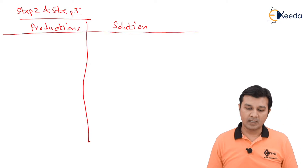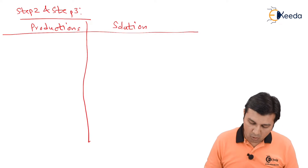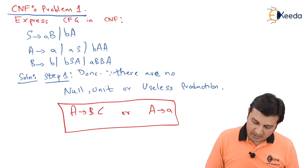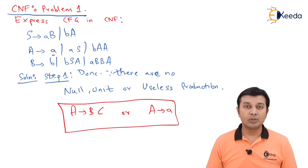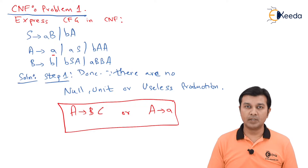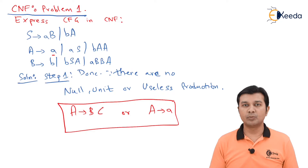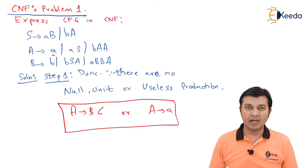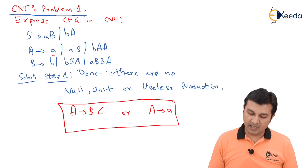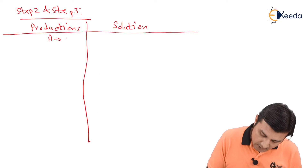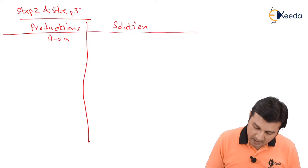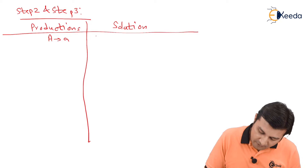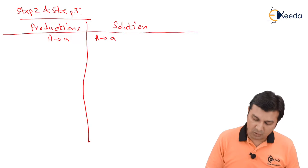Starting with the simplest production: A gives small a. Writing the production A gives a — this is already in CNF form. Therefore, I add it directly to the solution.